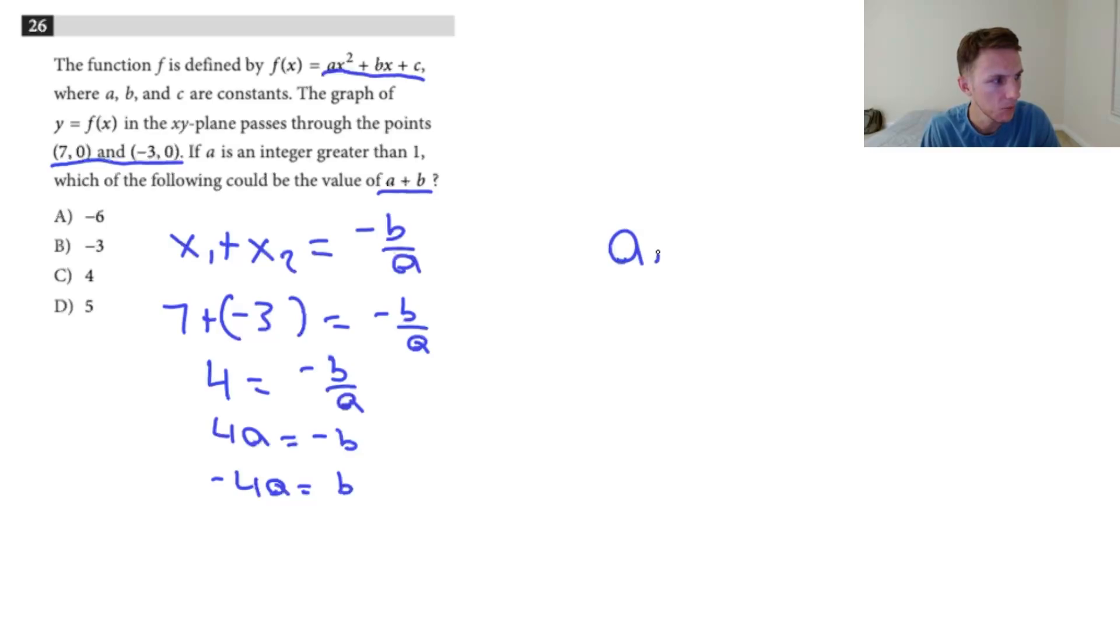Now I'll move over here. We want to find a plus b. That's what the question's asking. Now that we've written b in terms of negative 4a, we can plug it in here and then simplify.